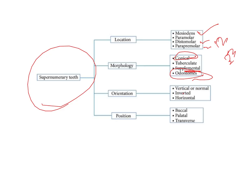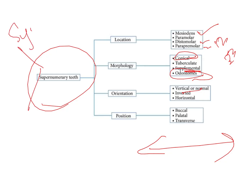Based on orientation, they can be vertical or normal, inverted, and horizontal. Based on position, they can be placed buccally, palatally, or both in the buccal as well as palatal direction — horizontally placed with orientation on both the buccal and palatal aspects. In addition to that, they can also be classified based on whether they are associated with syndromes or not — syndromic and non-syndromic.